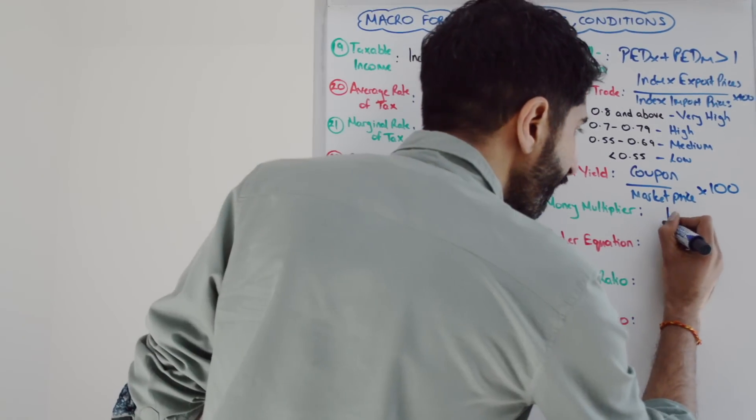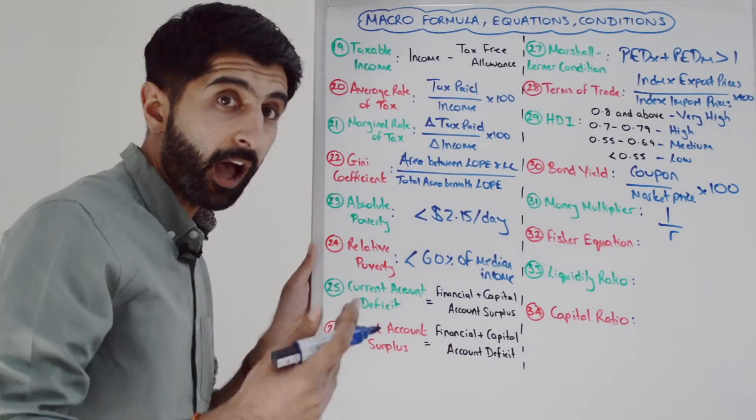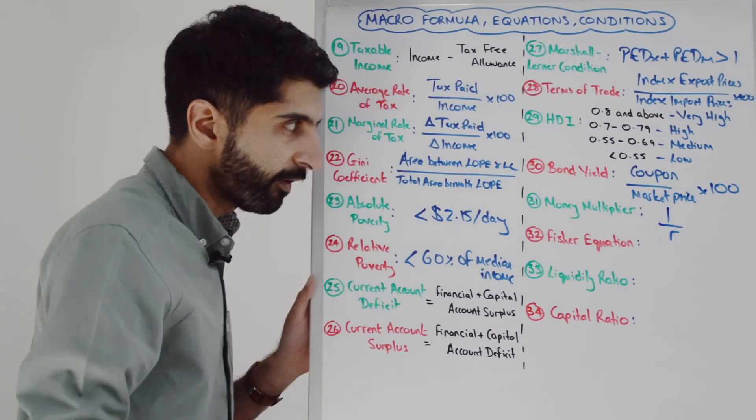To work out the money multiplier, it's 1 over the reserve requirement - that is R. So R is the reserve requirement, 1 over that, you get the money multiplier.